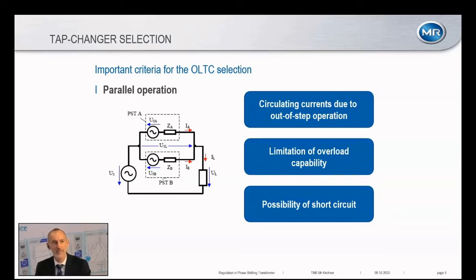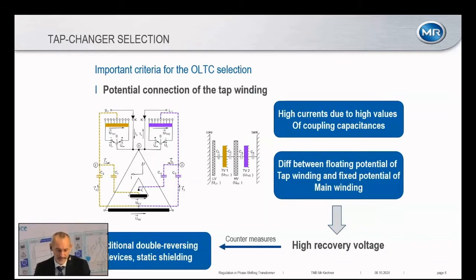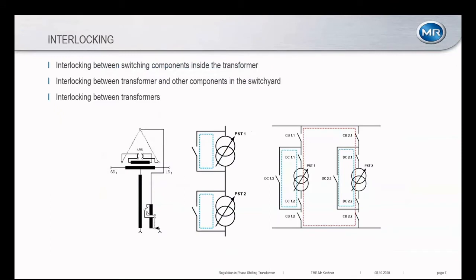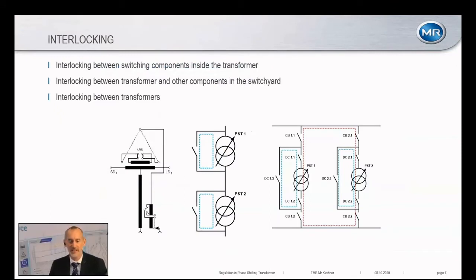We ask customers whether parallel operation is planned and what the circulating currents are, so we can account for them. Another point, especially for single core designs, is the potential connection of the tap winding. There is a special single core design where very high recovery voltages appear on the pre-selector — in some cases so high they cannot be handled without shielding on the regulation windings. This must be considered up front, not at the end of the design stage.